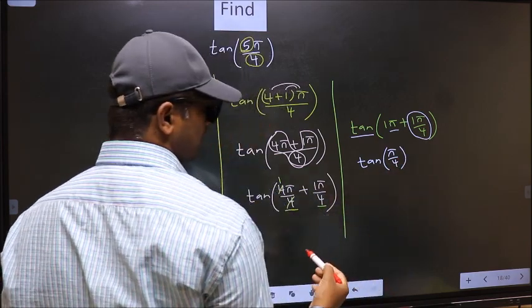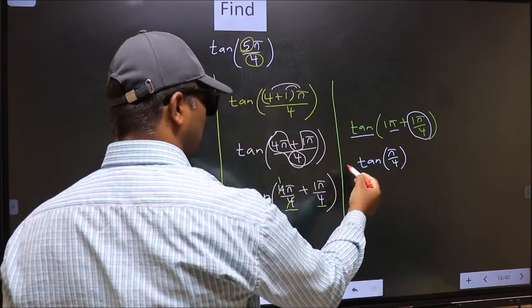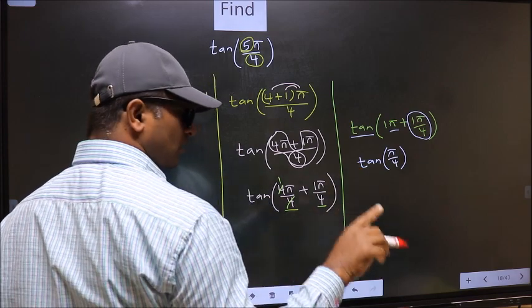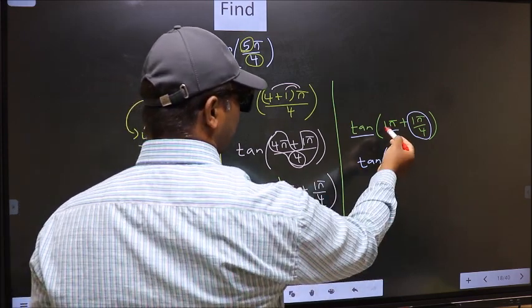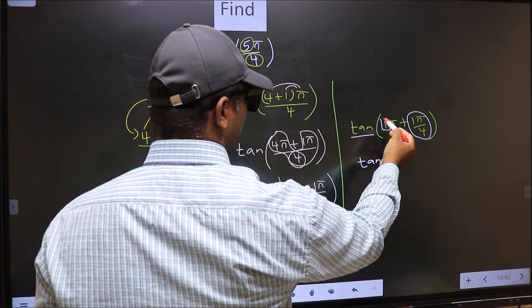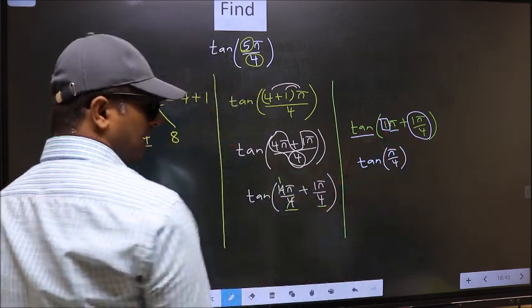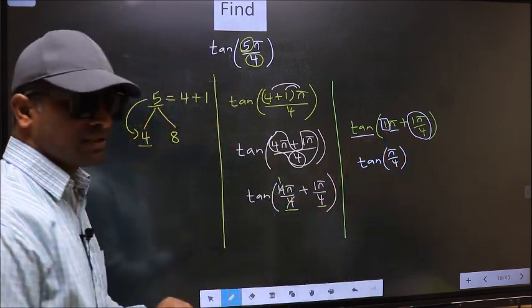Now the question is: will we get plus or minus? To answer that, we should look at the number before π, which is 1, and 1 is odd.